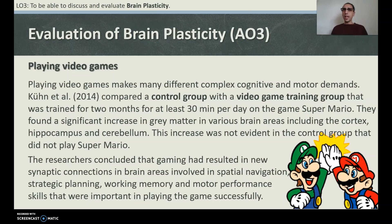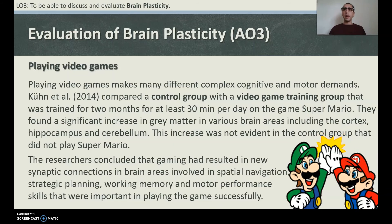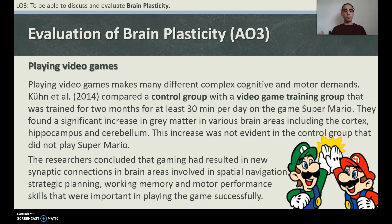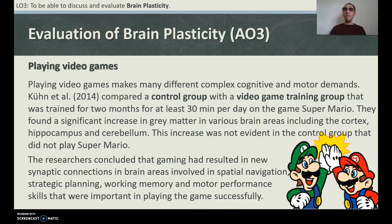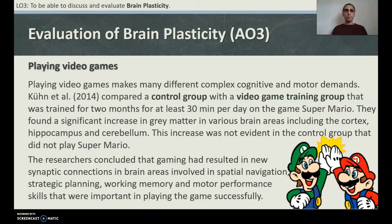Playing video games makes many different complex cognitive and motor demands. Kuhn et al. (2014) compared a control group with a video game training group that played Super Mario for at least 30 minutes per day for two months. They found a significant increase in grey matter in various brain areas including the cortex, hippocampus, and cerebellum. This increase was not evident in the control group that did not play Super Mario. The researchers concluded that gaming had resulted in new synaptic transmissions in brain areas involved in spatial navigation.